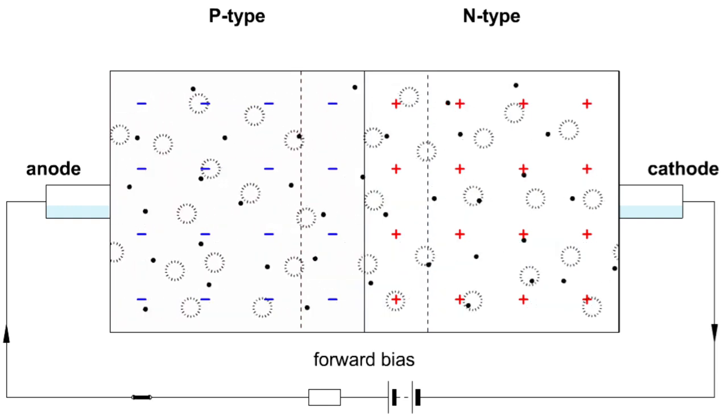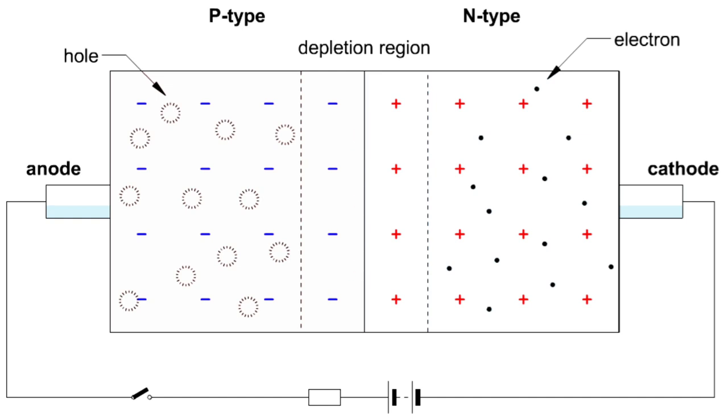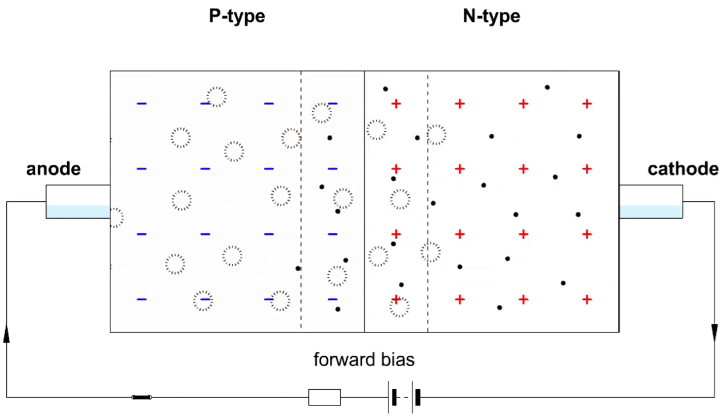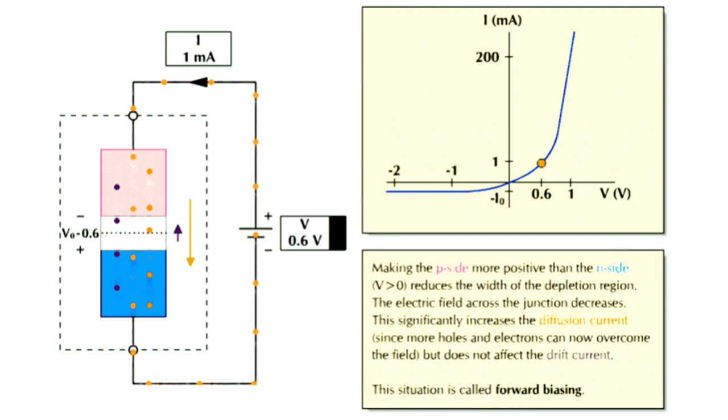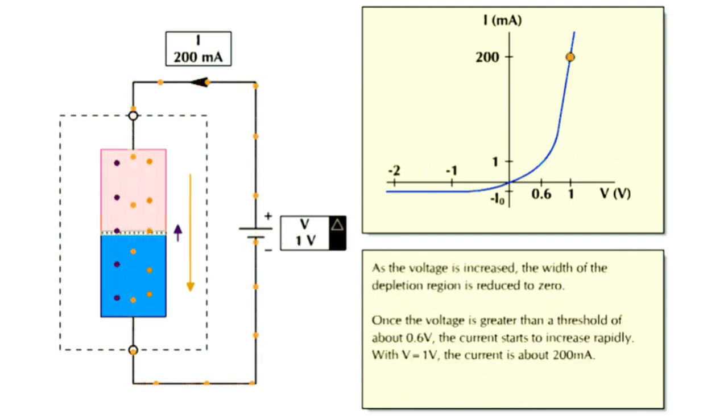The flow of these charge carriers constitutes the forward current through the diode. The forward voltage drop across a diode is typically around 0.7 volts for silicon diodes and varies for other materials.